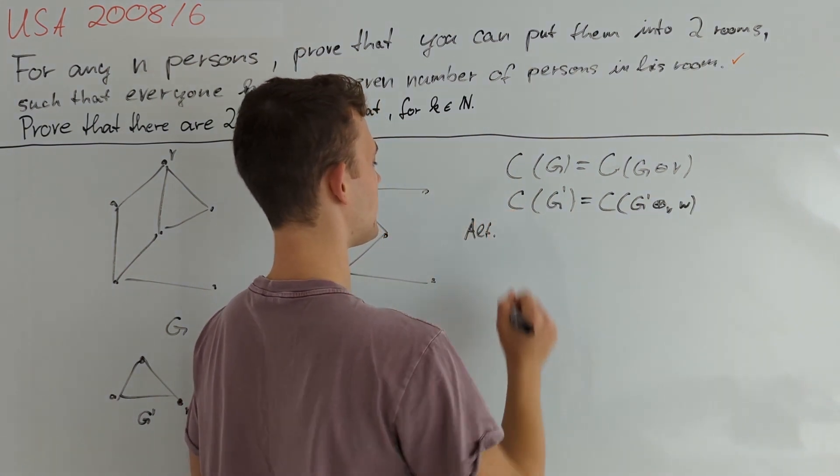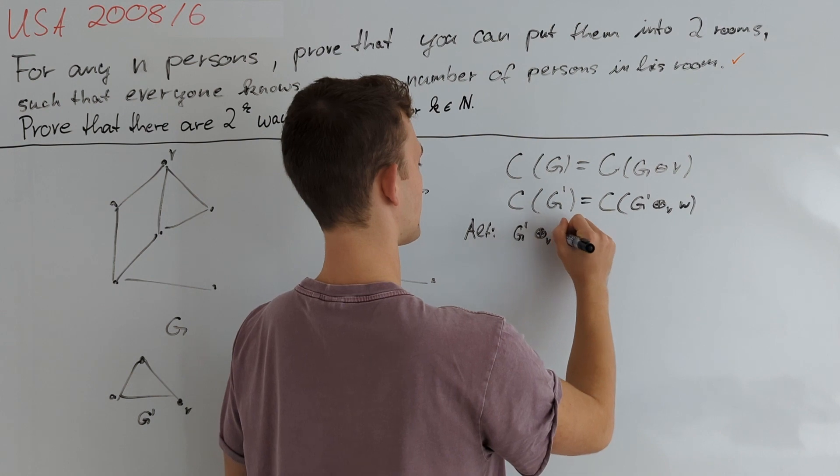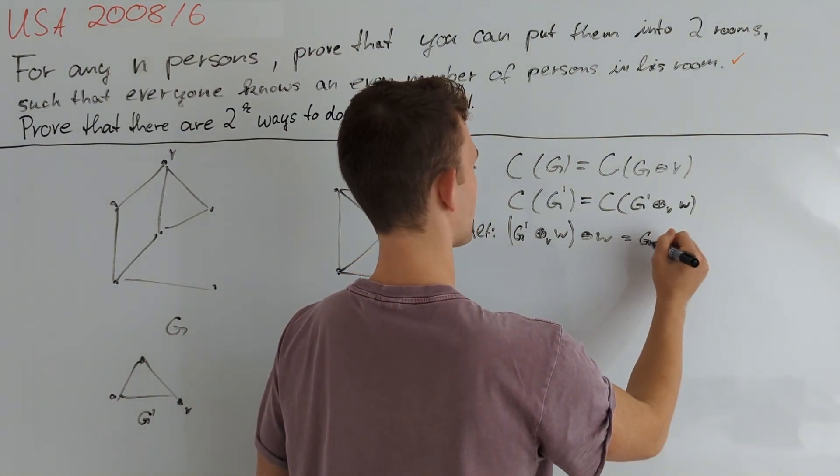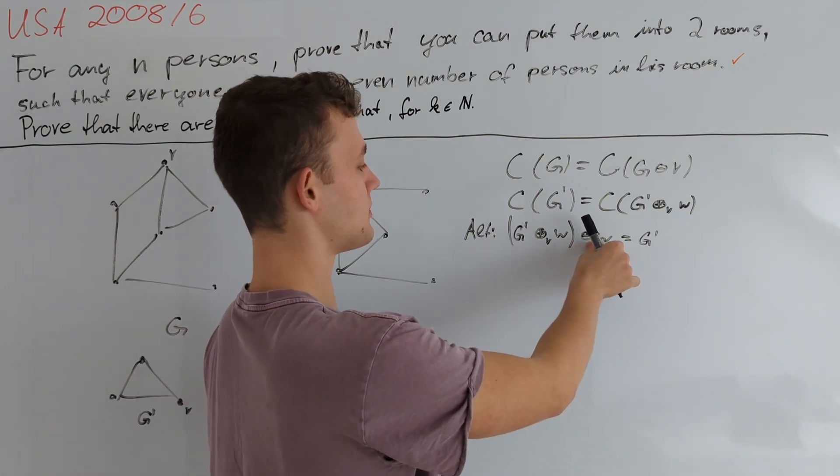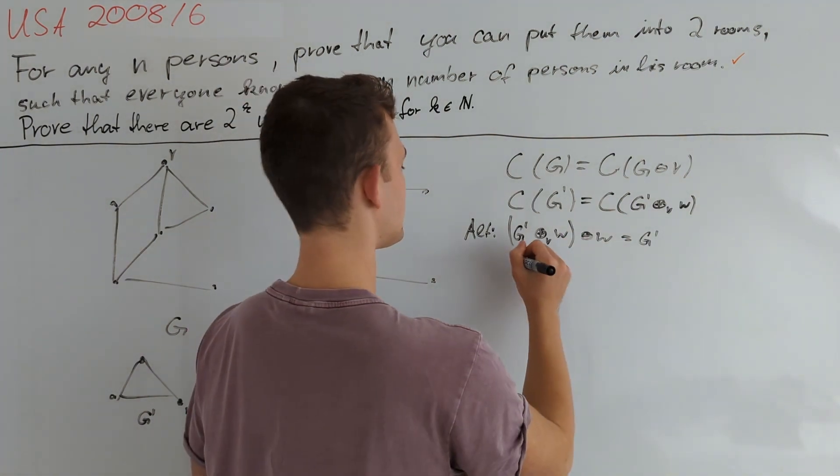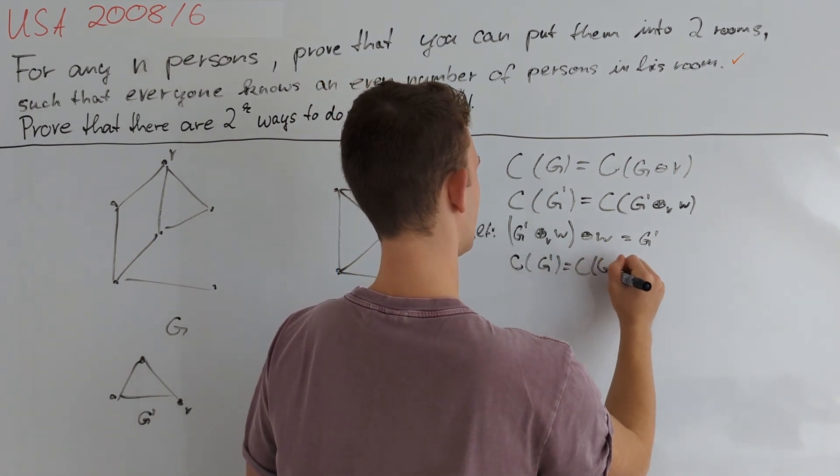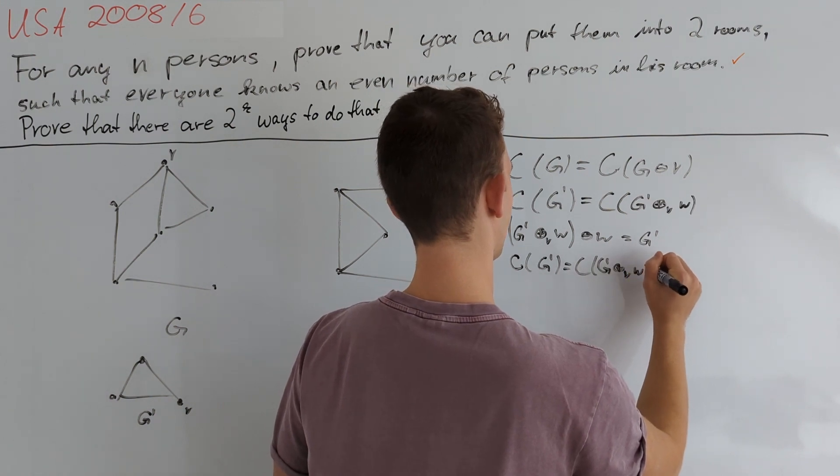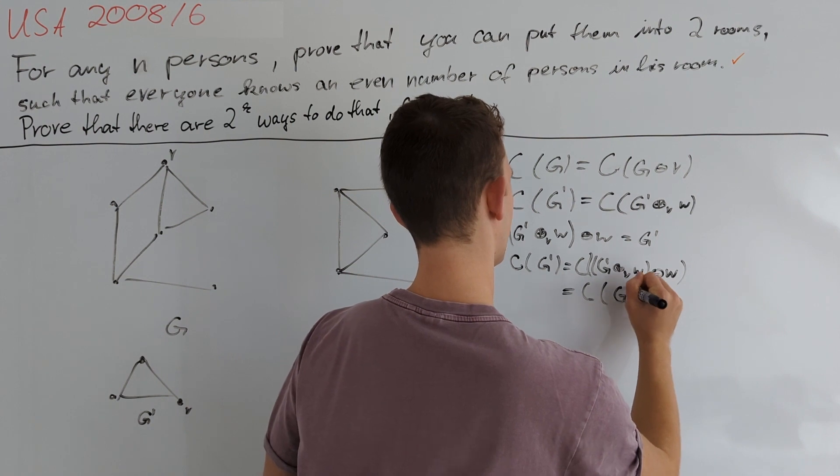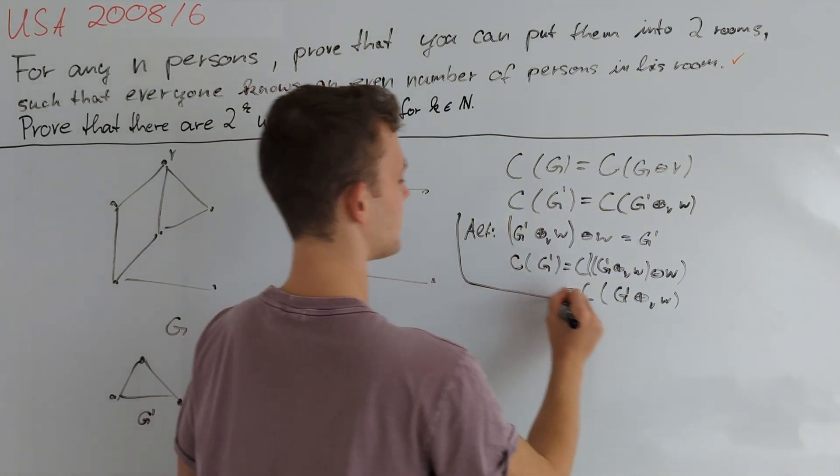And I quickly want to show an alternative proof for why this must also be true that one can immediately write down after having proved the first step. So alternatively we get that note that doing an O plus subscript V of W and then doing O minus W again is nothing but G prime again because flipping all of the edges between neighbors of W in this graph does nothing. So this is just adding W and then removing it again. And this tells us that C(G prime) is equal to C(G prime O plus subscript V W O minus W), which is then nothing but C(G prime O plus subscript V W). So this is a really nice proof of that identity as well but really just a side note.